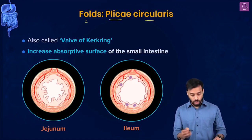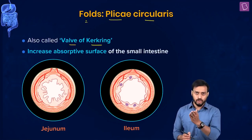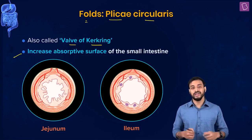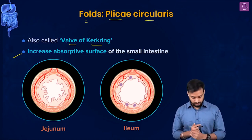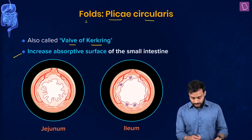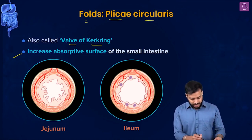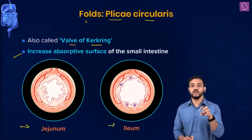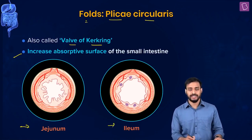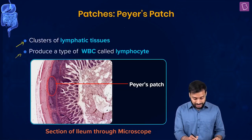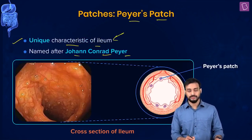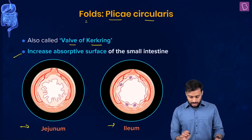Now the folds are known as plica circularis, also called the valve of Kerckring folds. Their function is to increase the surface area for absorption in the small intestine. In the jejunum, plica circularis are very prominent, whereas in the ileum they are less prominent - the ileum is where Peyer's patches are more prevalent.